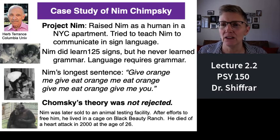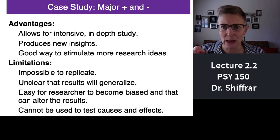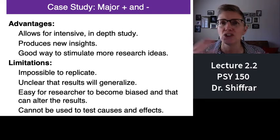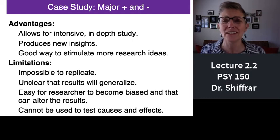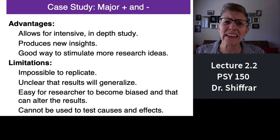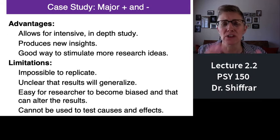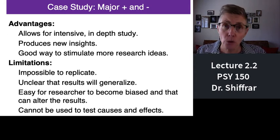Nim is an example of a case study. The advantages and disadvantages: you can really study something in depth, which gives you new ideas and new insights — it's a great way to generate new research ideas. But it's impossible to replicate, and there's no reason to believe that results from one person can generalize to all other people or chimpanzees. It's also very easy for researchers to become emotionally attached to the one person or animal they're studying, which can bias the results. You want scientists to remain objective. And you cannot use case studies to test cause and effect.